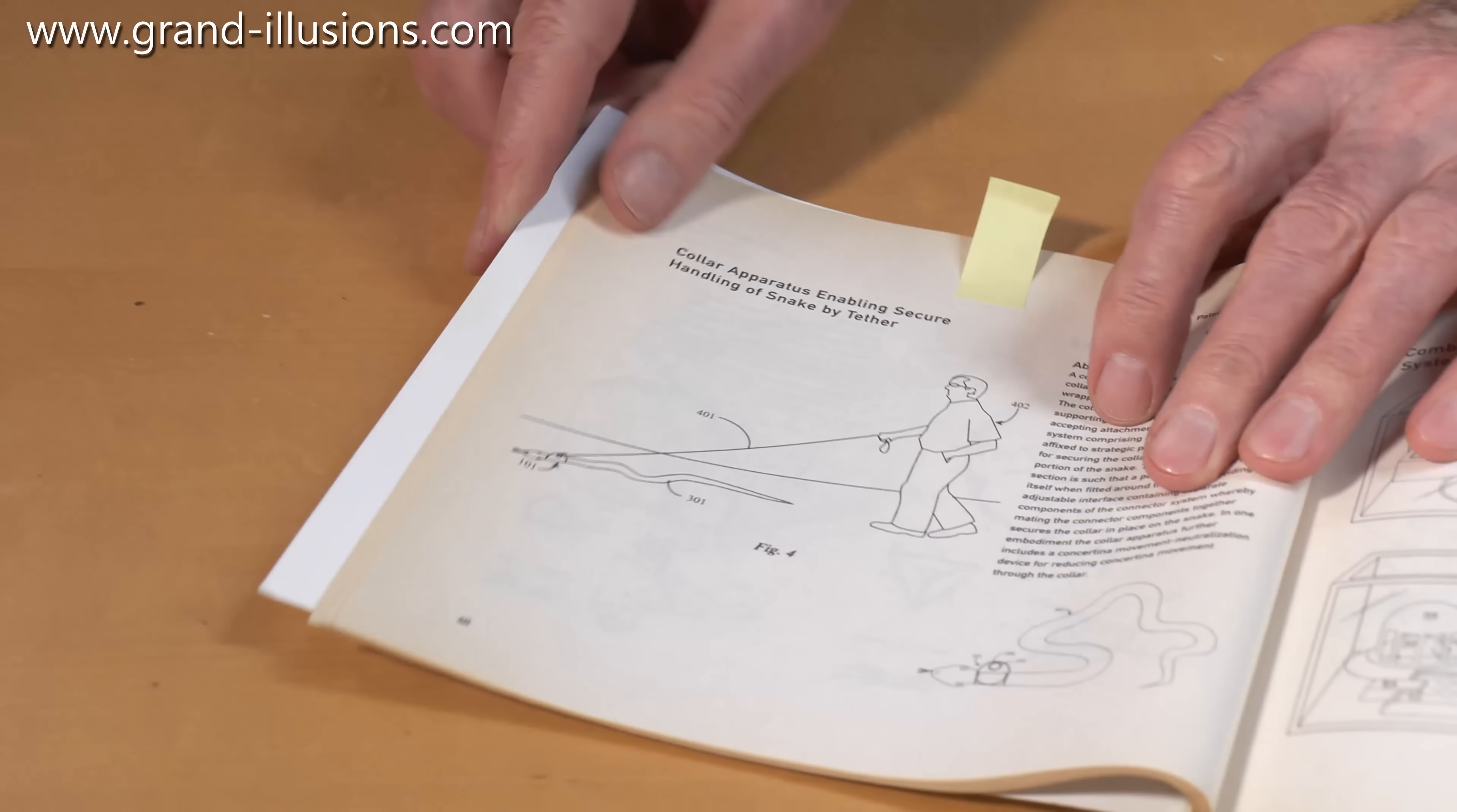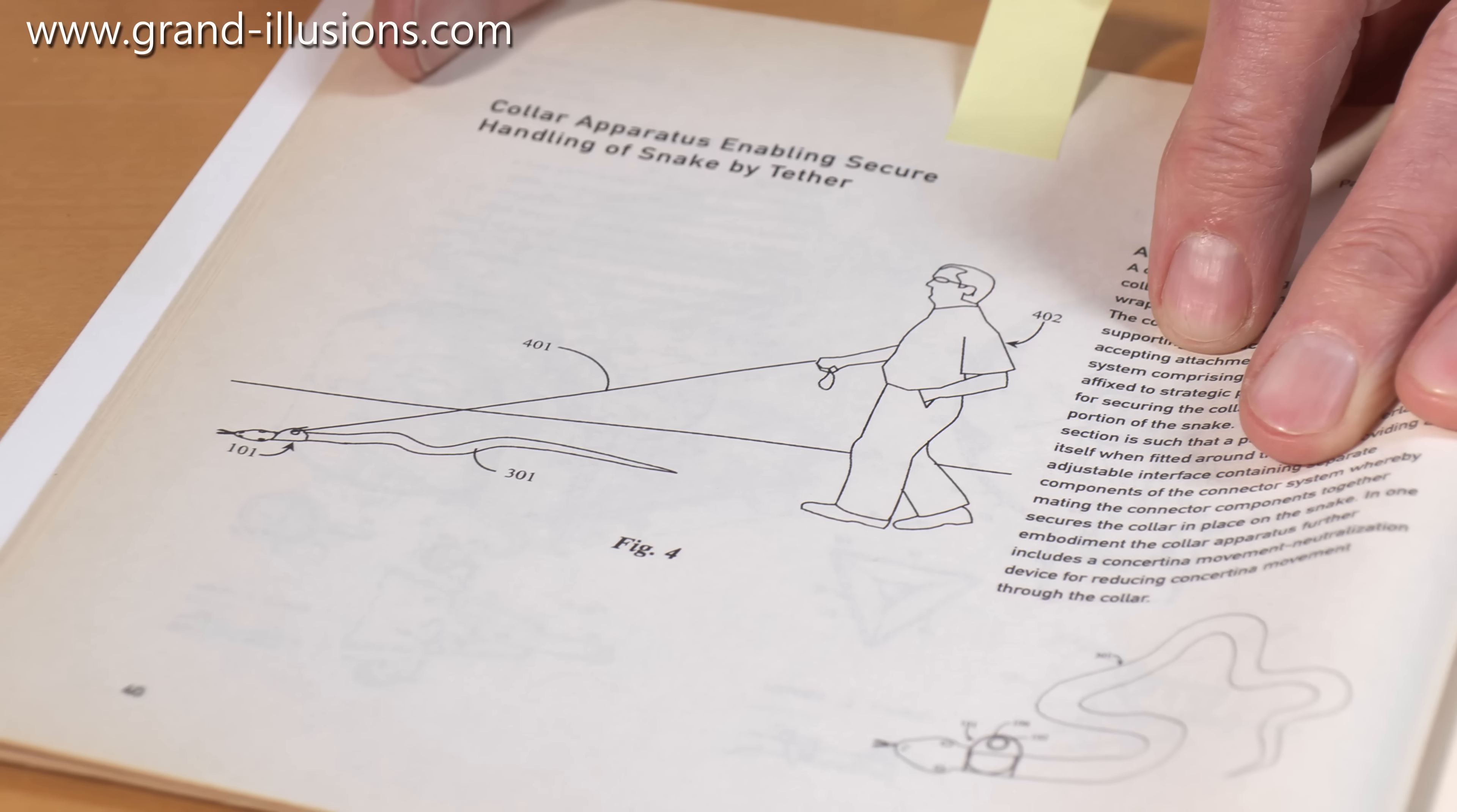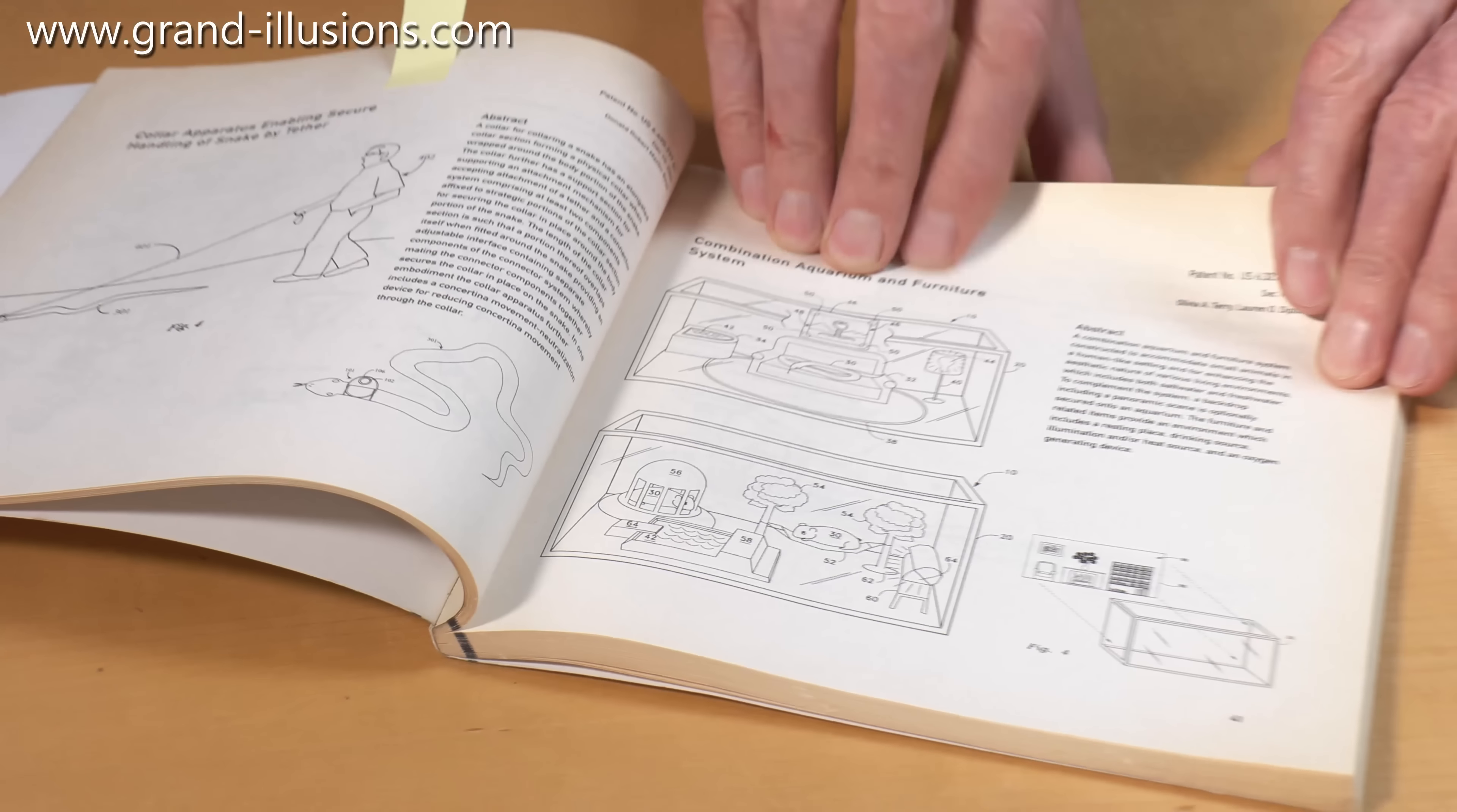The first one is an extraordinary idea. It's showing a gentleman who invented something for taking your pet snake, would you believe, to the shops when you're shopping. So there's a python or an adder, not walking, but slithering along the ground, and you're holding it on the string. Extraordinary idea! To make a patent on that is bizarre, isn't it?